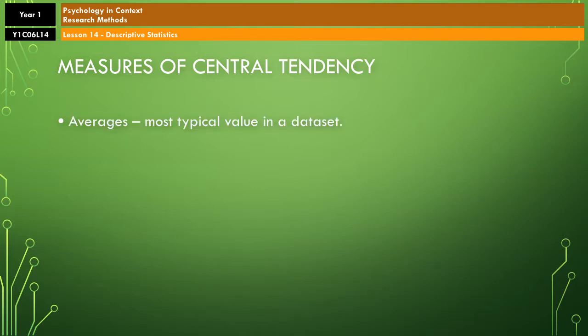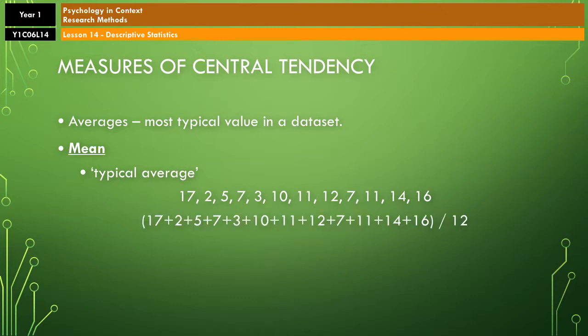So we'll start off with the mean. The mean is what all of you know as the typical average. So if you take that data set, all you would do is add up every number and then divide it by the amount of numbers that you have, which is 12. So that comes to 115 divided by 12, which gives you a mean of 9.6.